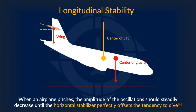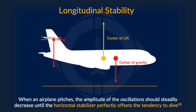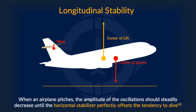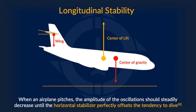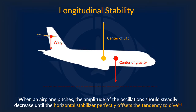When an airplane pitches suddenly, the amplitude of the oscillations would steadily decrease until the horizontal stabilizer perfectly offsets the tendency to dive. This gives an aircraft positive longitudinal stability.